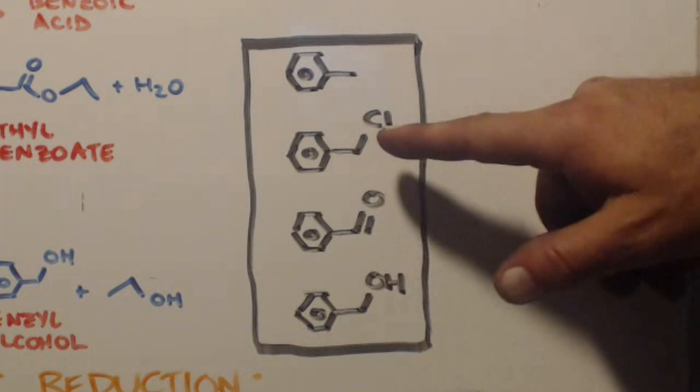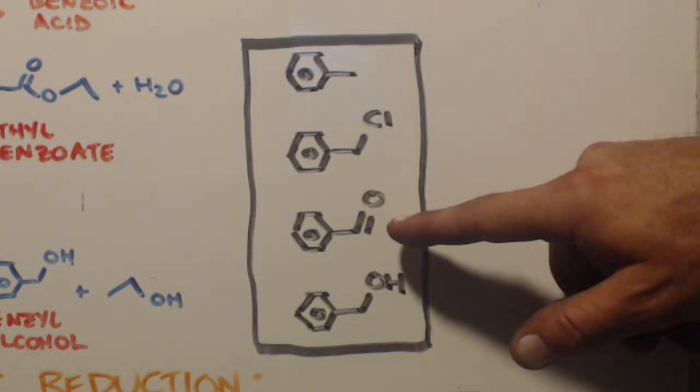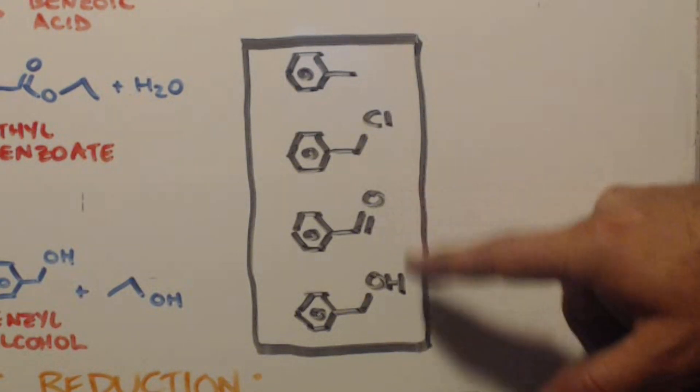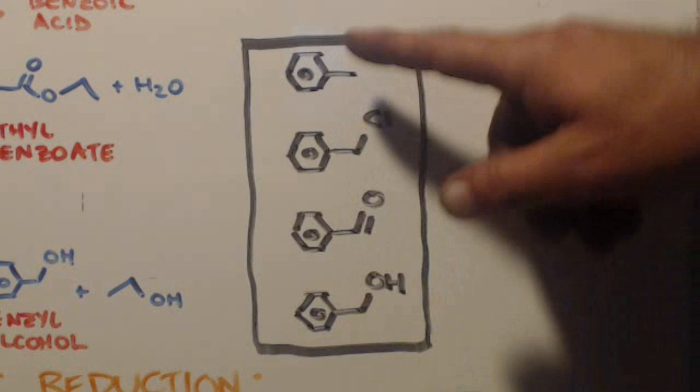If you notice, they're all toluene. This one has a chlorine on it. This one has a double O on it, carbonyl. This one has a hydroxy group, but they're all toluene.